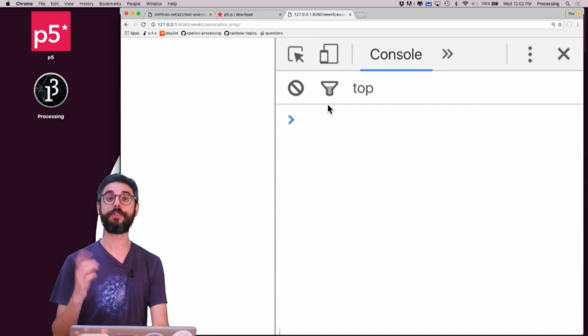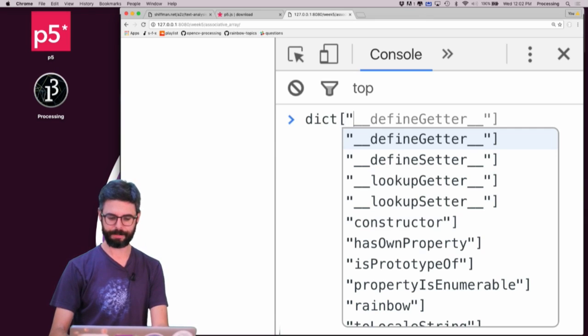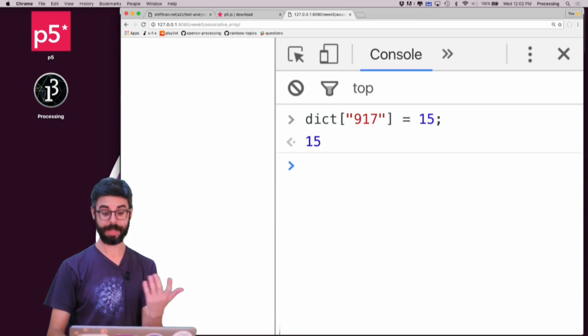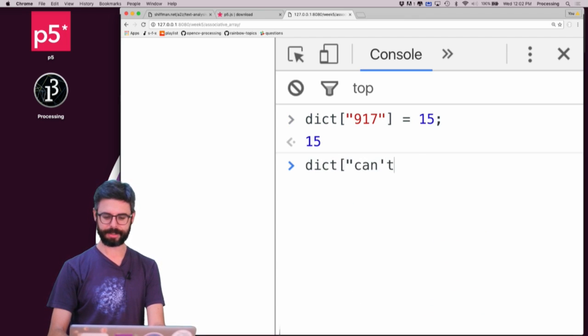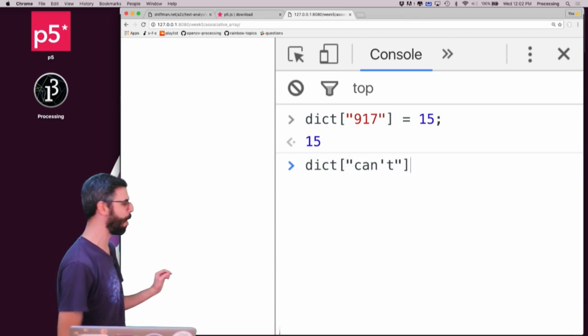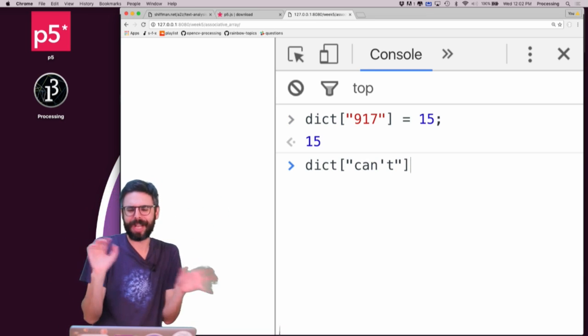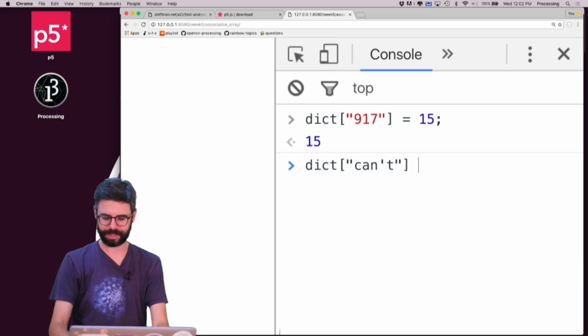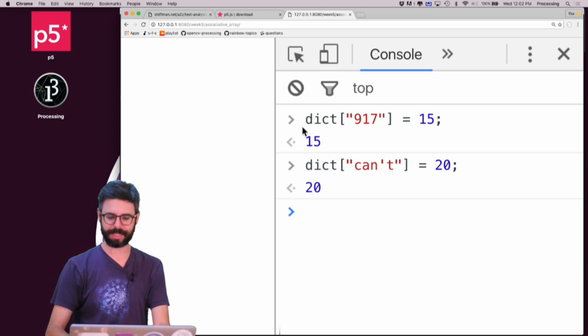So first, let's confirm that it works. If I say dictionary 917 equals 15. That works. And I say dictionary can't. Now notice I switch to using double quotes. I switch to using double quotes because there's a single quote in can't. And so it'll get confused if I use single quotes and a single quote. But I can just use double quotes and it'll fix that problem. I can do this.